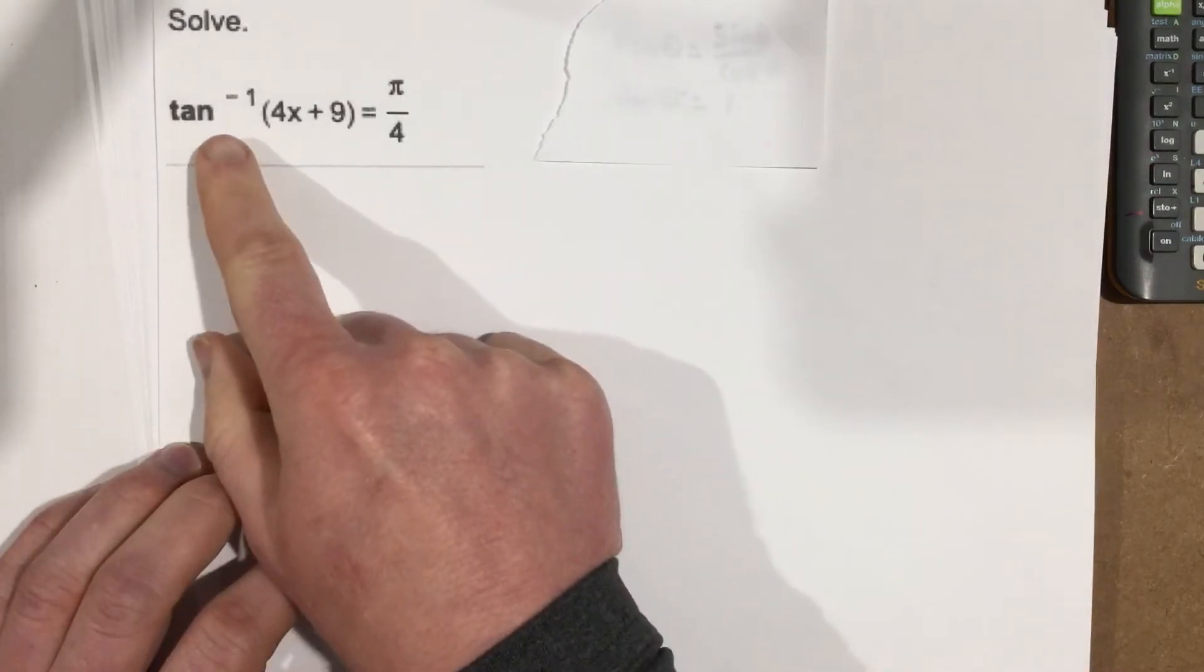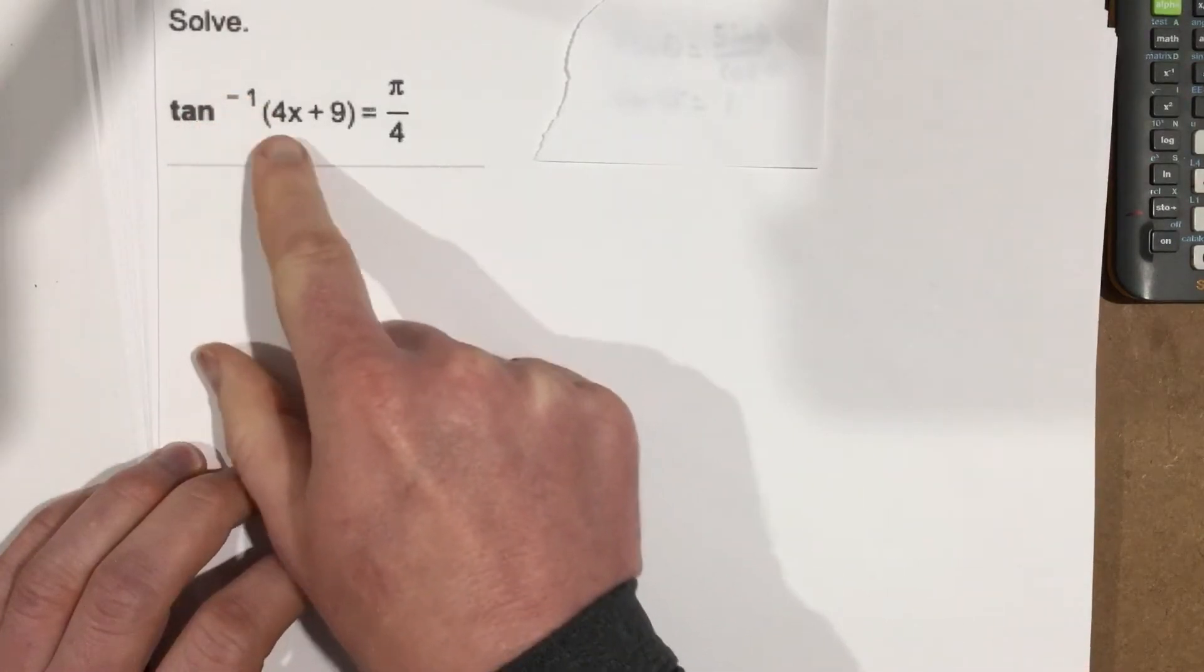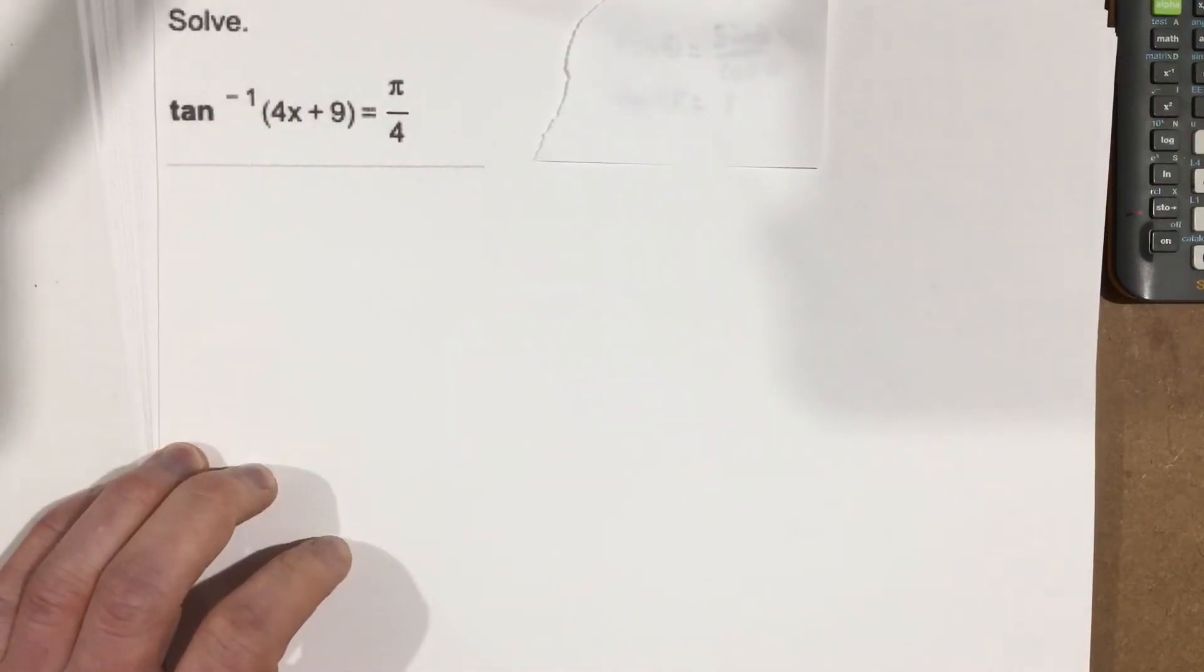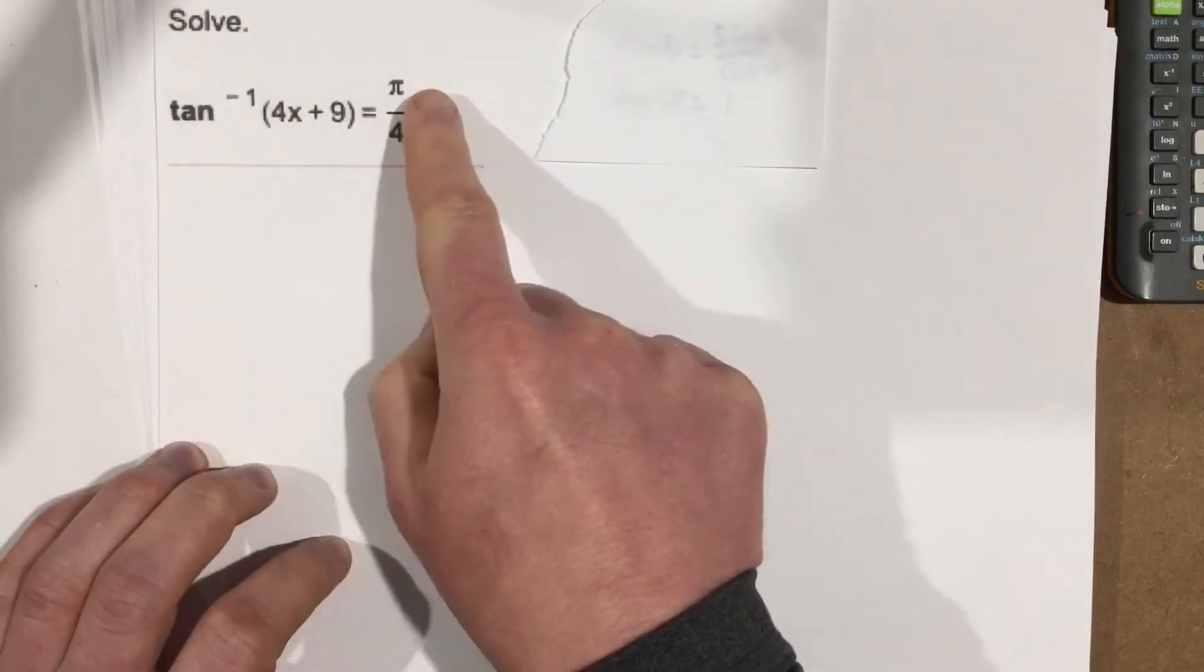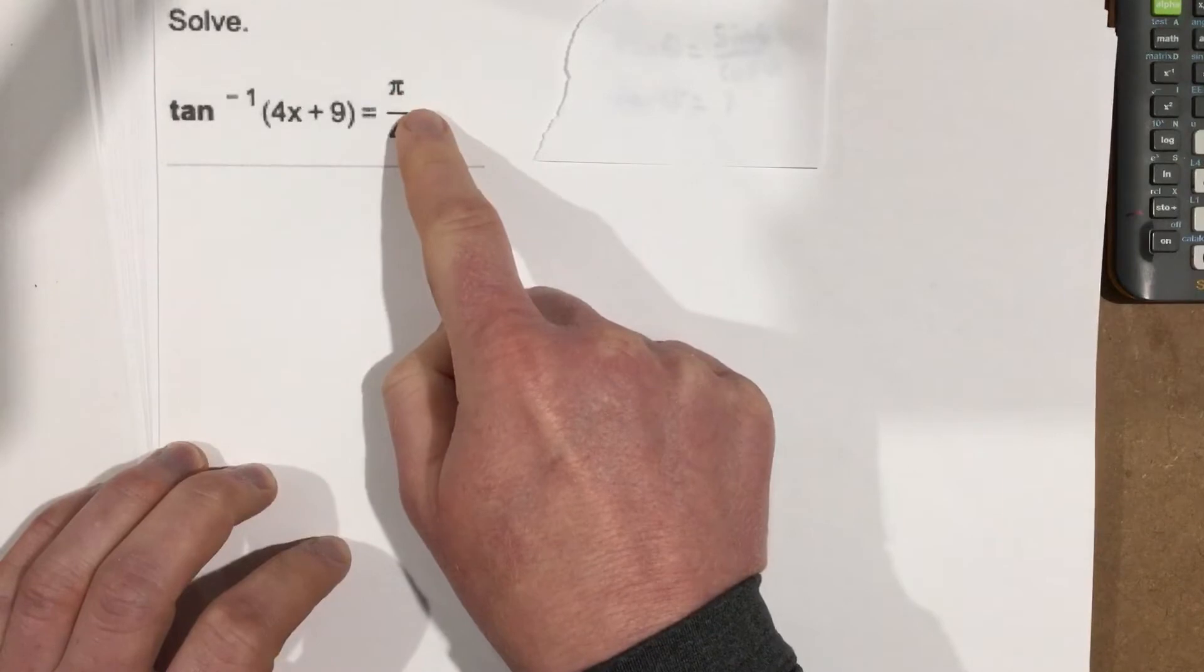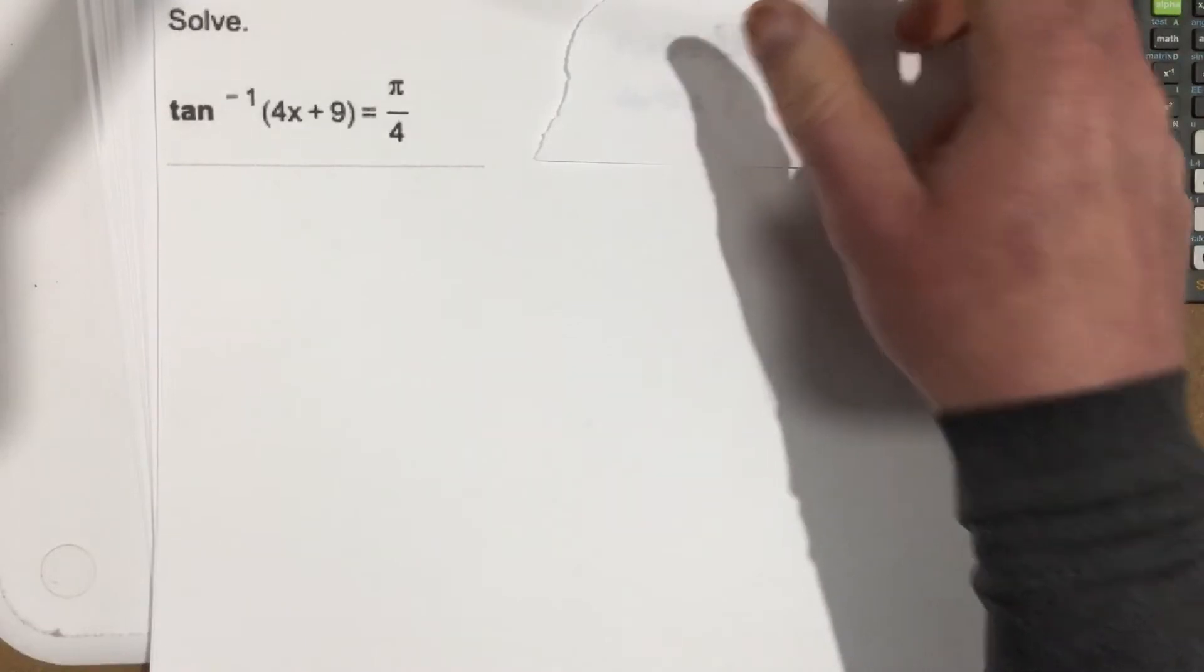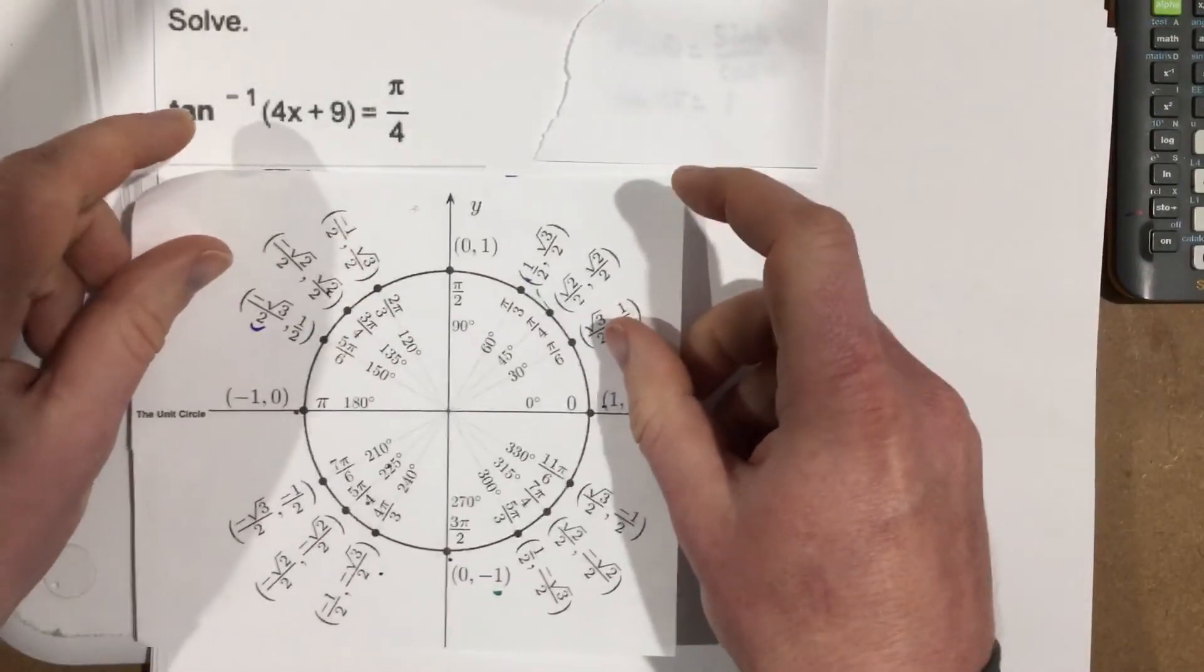The first thing I thought to myself was tangent inverse 4x plus 9. What am I going to do with this? Well, I started thinking, I know the tangent of pi over 4 on the right side. Like if I took tangent of pi over 4, I would know that. Because if I look at pi over 4 on my unit circle...